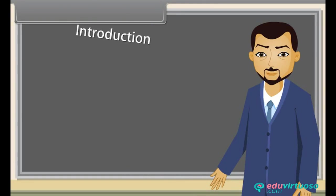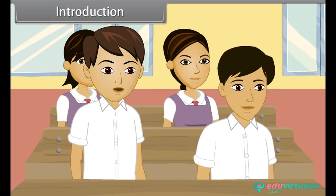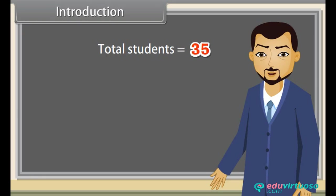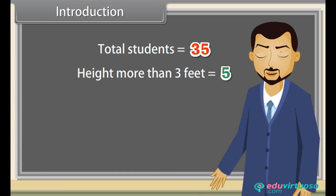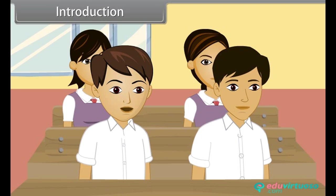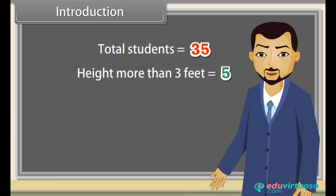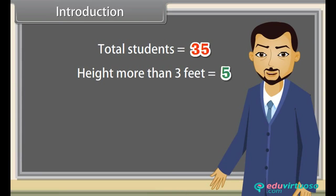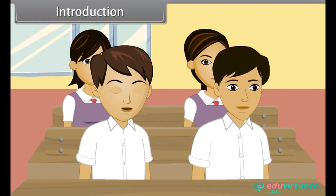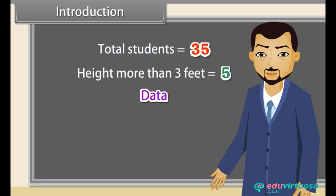Introduction: How many students are there in the class? Thirty-five. How many students have height more than three feet? There are five students. And how many girls are here? Oh, there are many girls. Do you know why I am asking these questions? No. I am taking data of your class. Data? Yes, and today I will explain everything about data.